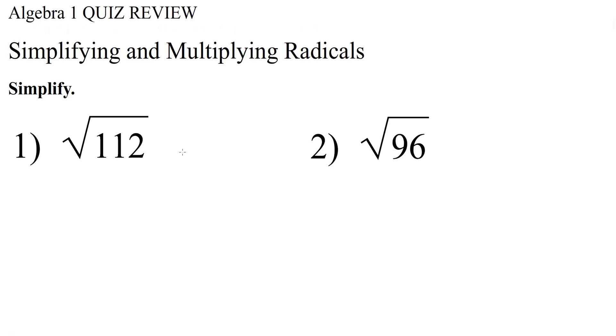Taking a look at number one, we have radical 112, and we need to simplify this. The way we're going to do that is we have to factor out the largest possible perfect square factor from 112.